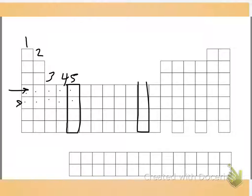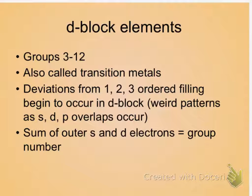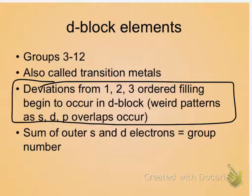What about group 11? How many D electrons would you find? The sum of the S and the D is 11. You've got 4S1, 4S2, 3D1 through 9. Sum of the outer S and D is going to be your group number. Because of these weird overlapping patterns, you tend to see multiple ions formed. We'll talk more about that in the next chapter — it's foreshadowing of the fact that we're going to see multiple ion patterns.